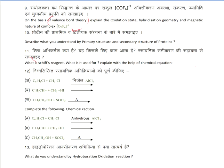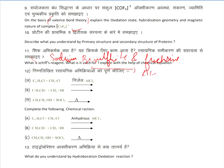Next question: what is Schiff reagent and what is it used for? Explain with the help of a chemical equation. Schiff reagent is a product of sodium bisulfite and fuchsin. It is used to differentiate between aldehyde and ketone. The chemical reaction you can write from your NCERT book.